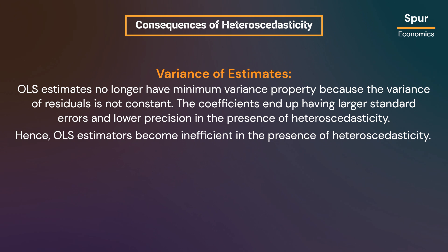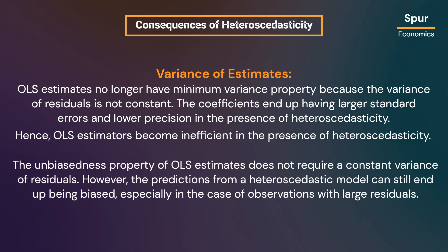OLS estimates no longer have the minimum variance property because the variance of residuals is not constant, and the coefficients end up having larger standard errors and lower precision. Hence OLS estimators become inefficient in the presence of heteroscedasticity. While the unbiasedness property of OLS does not require constant variance of residuals, predictions from a heteroscedastic model can still end up being biased, especially in the case of observations with large residuals.